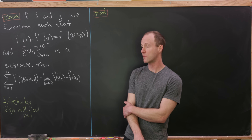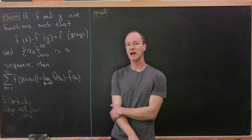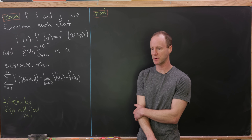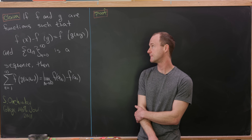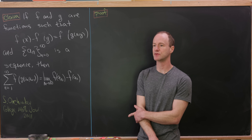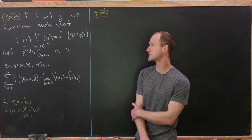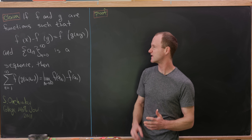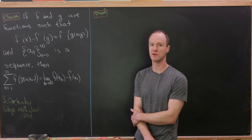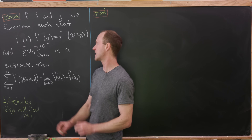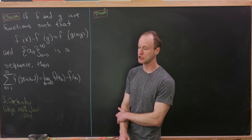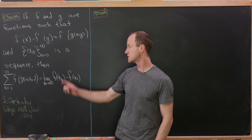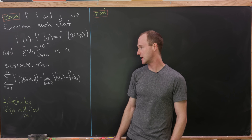Today we're going to look at a result that may seem overly technical, but it'll actually allow us to produce some nice summation identities which would otherwise be very difficult to get at. So let's see this result and then we'll do some examples. We'll suppose that f and g are functions satisfying this relationship, where f of x minus f of y is equal to f of g of xy. We'll also suppose that we've got a sequence denoted by a sub n.